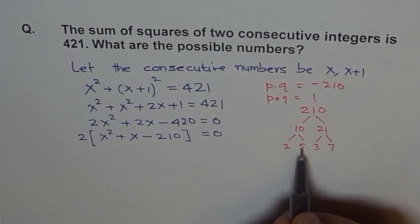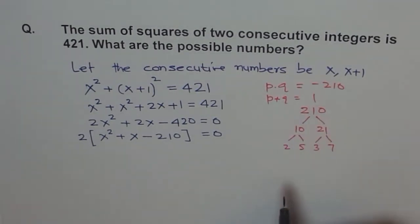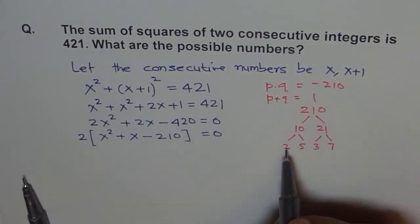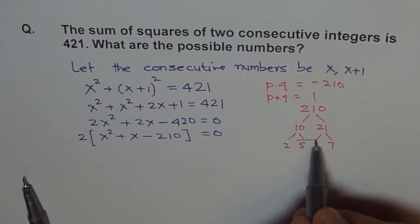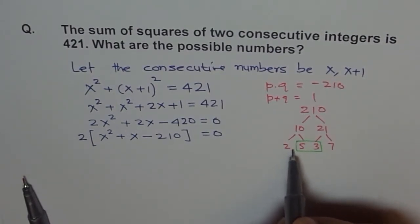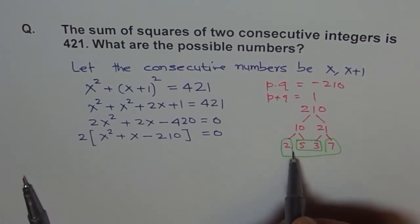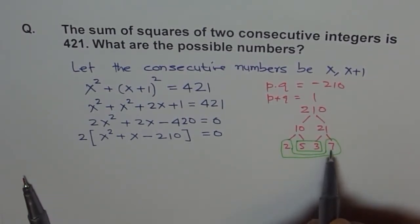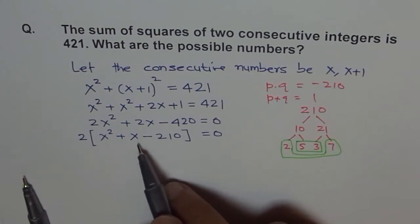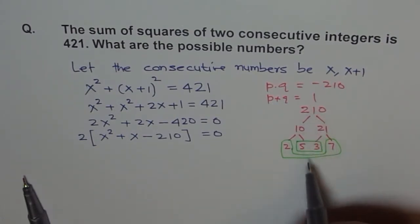Now these are your factors for 210. If you see, we can combine some terms. If I do 5 times 3 it is 15, and if I combine 2 and 7 then I get 14. When you multiply them you get 210, and 15 and 14 difference is 1, so it serves our purpose. That's a very good strategy to deal with big numbers.